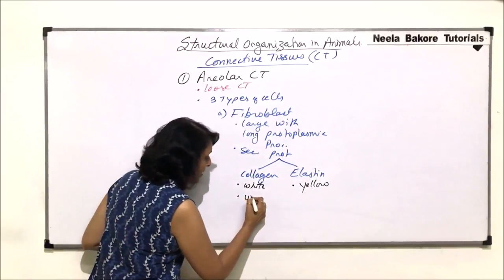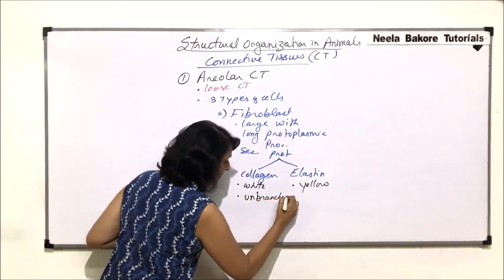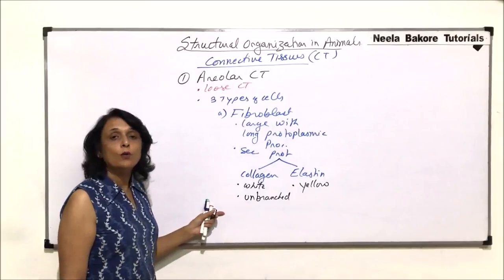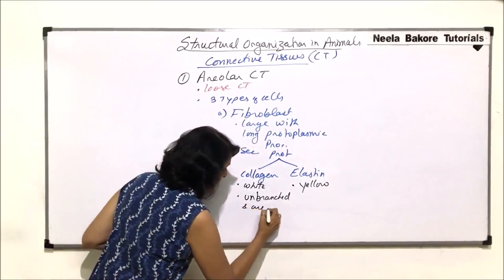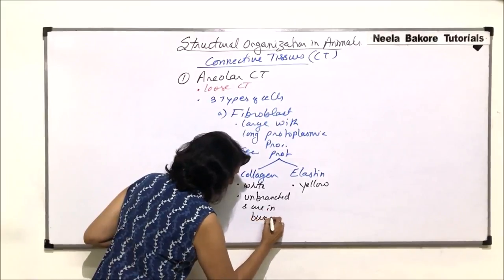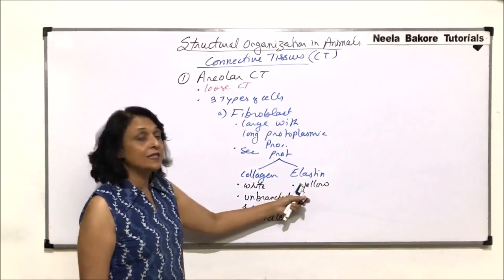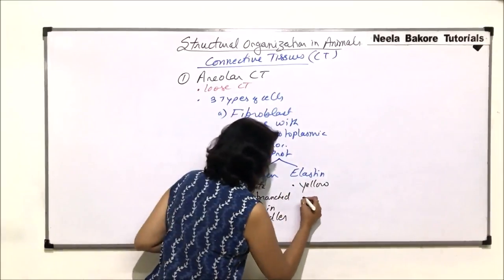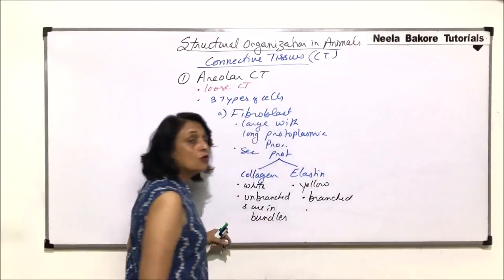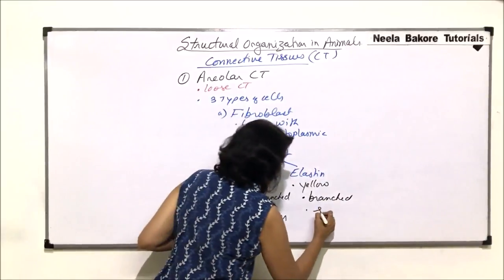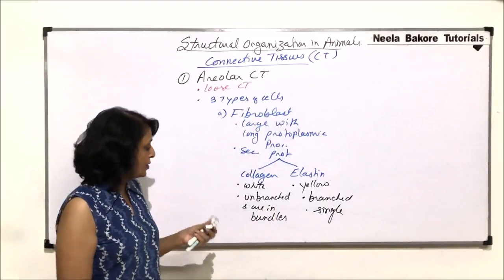Collagen fibers are unbranched and they always occur in bundles and are in bundles. The second one, that is the yellow elastin fibers, they are branched and they are normally single. Single fibers are there and they are branched.